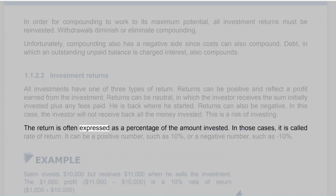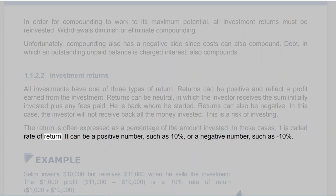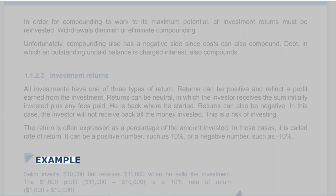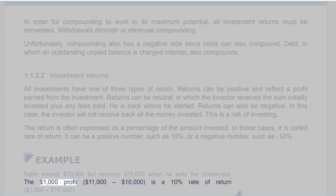The return is often expressed as a percentage of the amount invested, in which case it is called the rate of return. It can be a positive number, such as 10%, or a negative number, such as minus 10%. For example, Salim invests $10,000 but receives $11,000 when he sells the investment. The $1,000 profit is a 10% rate of return ($1,000 divided by $10,000).